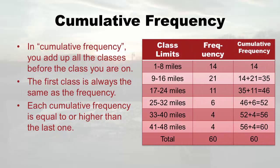Now let's talk about cumulative frequency. 'Accumulate' means to keep adding — like leaves accumulating in a gutter. Cumulative frequency adds up all the frequencies as you go. In class one to eight, frequency is 14, so cumulative frequency is 14. Add the next class frequency of 21, and cumulative frequency becomes 35. As you walk up all the classes, you eventually reach the total. The first class cumulative frequency always equals its frequency, and each subsequent one is equal to or higher than the last.